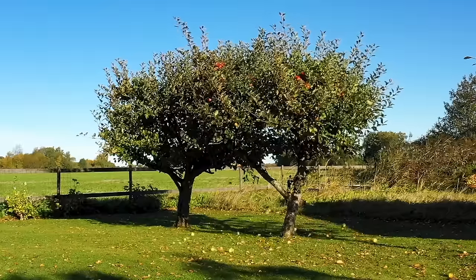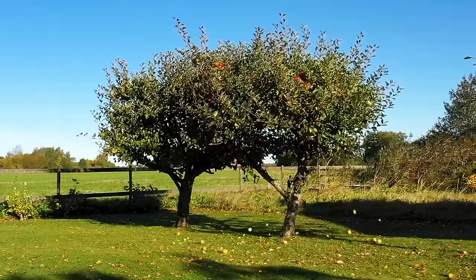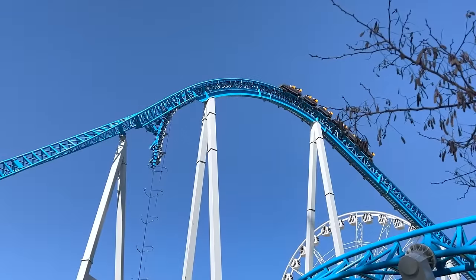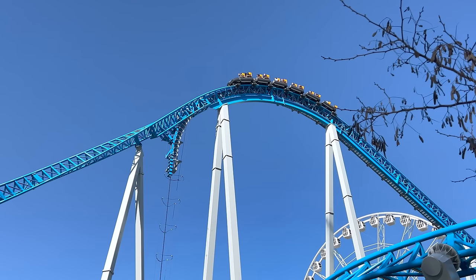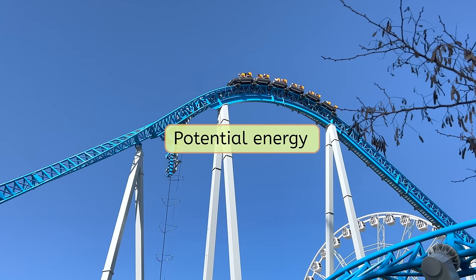We have a perfect example of an object's mechanical energy shifting between potential and kinetic. The roller coaster! As the ride reaches the top of the hill, it has a lot of potential energy. It's sitting at a great height, and the force of gravity is pulling it towards the ground.